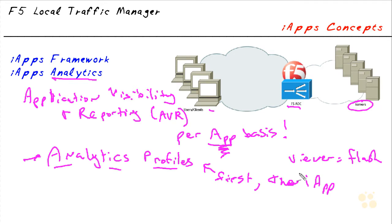The system can also set up alerts — different thresholds and things like that. You can customize all sorts of values based on what you want for that application: transactions per second, latency, throughput, load times — all of those things — all in order to manage the application portion of things. That's the analytics part and the other cool side to iApps.